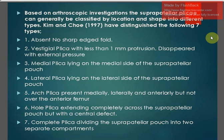Kim and Kovey found that sometimes it is absent — no sharp-edged fold is present — and sometimes it is vestigial, with less than one millimeter protrusion that disappears with external pressure. They also described a medial plica lying on the medial side of the suprapatellar pouch, a lateral plica on the lateral side, an arch plica present medially, laterally, and anteriorly but not over the anterior femur, a whole plica extending completely across the suprapatellar pouch but with a central defect, and a complete plica dividing the suprapatellar pouch into two separate compartments.